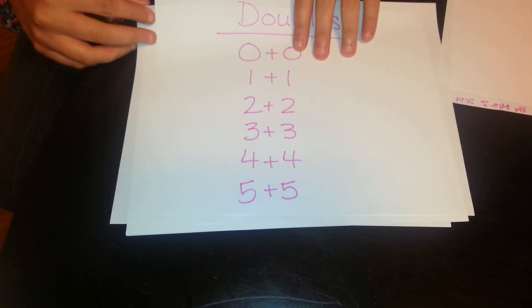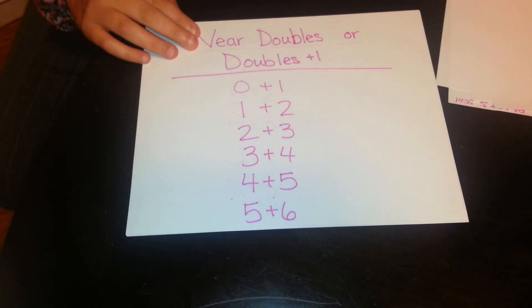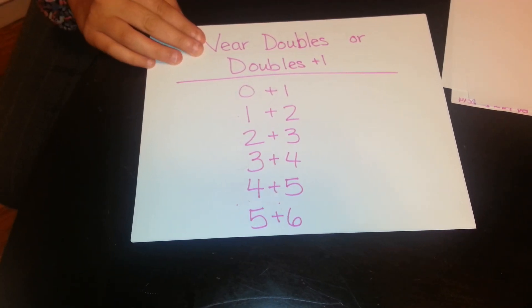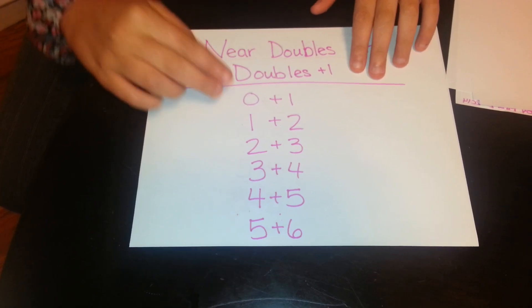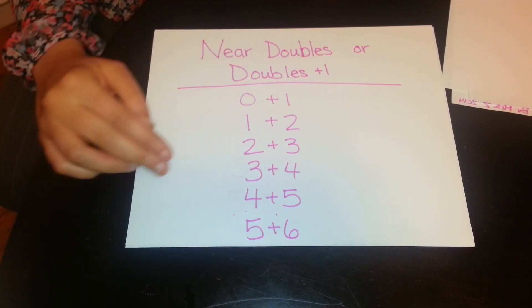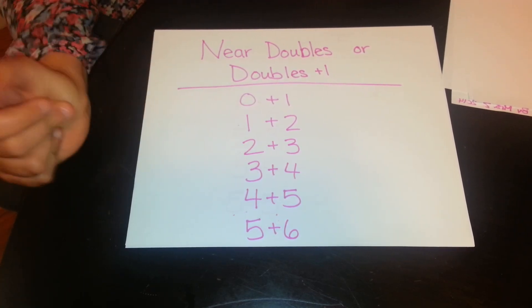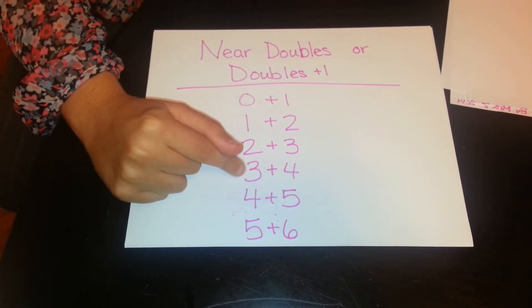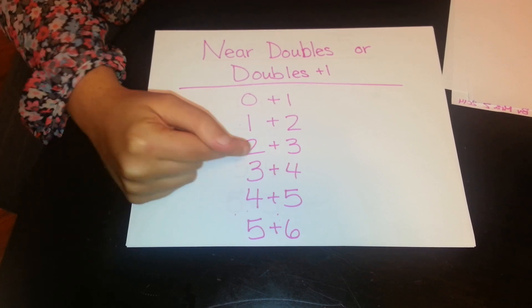Once they know their doubles fluently, it can help them with their near doubles. Also sometimes referred to as doubles plus 1. So instead of 0 plus 0, it's 0 plus 1. The reasoning is if they know, for example, 3 plus 3 is 6, then they should know 3 plus 4 is just one more. So 3 plus 4 is 7.